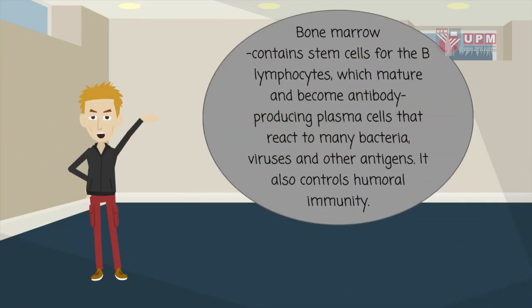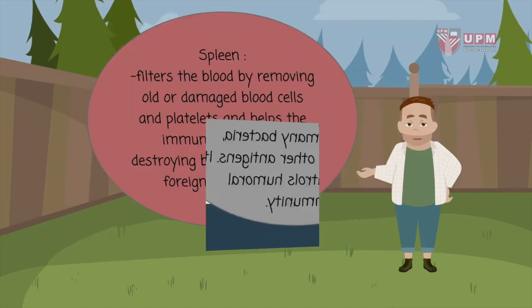Bone marrow contains stem cells for B lymphocytes, which mature and become antibody-producing plasma cells that react to many bacteria, viruses and other antigens.